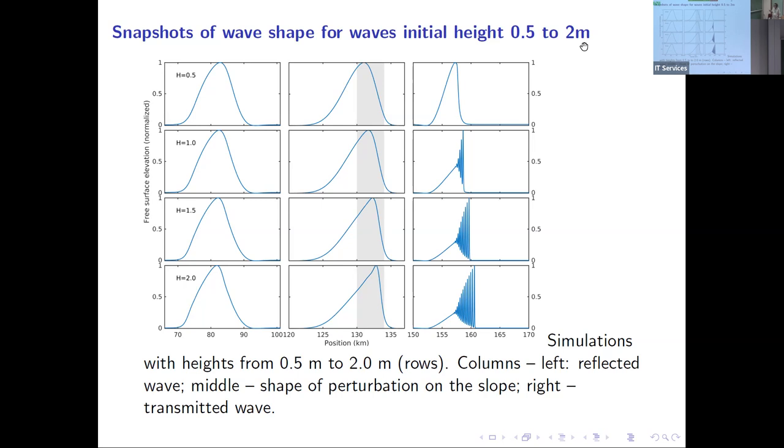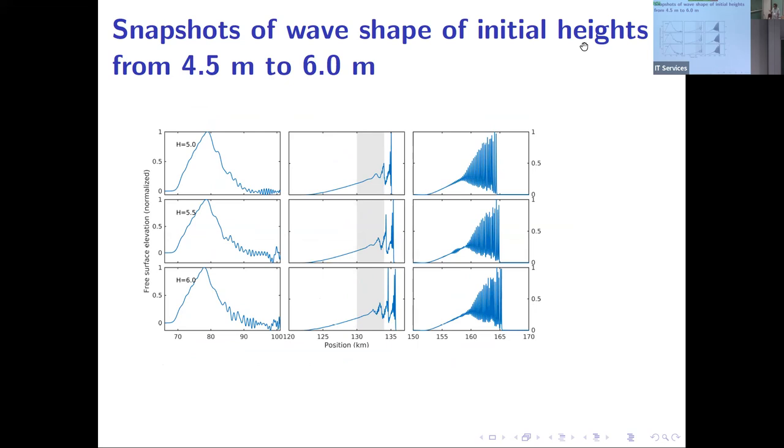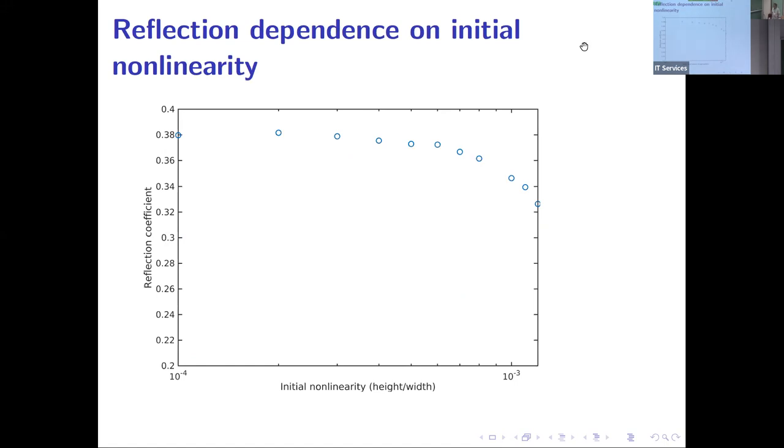This is more of the same. For large amplitudes, you see the pulse becomes more and more asymmetric, and here it develops a strong dispersive shock structure already on the slope. This is after the slope. For even higher amplitude, now what we were after was the reflection. This plot shows how the reflection depends on initial nonlinearity, and we see that it decreases with increase of amplitude.